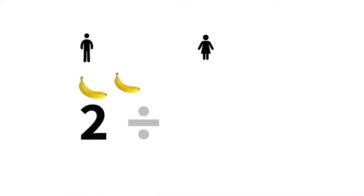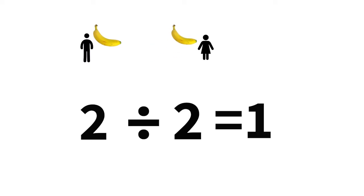Remember, my friend came with two bananas. She shared one with me and remained with one. Two bananas shared by two people. Two divided by two equals one.